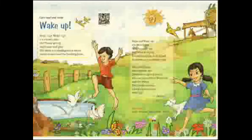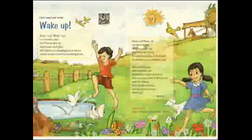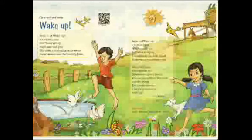Now the third stanza: 'Wash and dress and come on out. Now everyone is up and about. The cow, the horses, the duck and the sheep, the tiniest chicken — chip, chip, chip. Wake up.' In this stanza too the poet is asking the children to get up, get ready, wash themselves, and wear their clothes. All creatures like duck, cow, horse, sheep, and even the tiny chicks are already awake — so why are you still sleeping? You should get up early in the morning and go out and play.